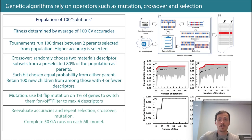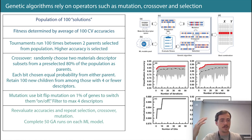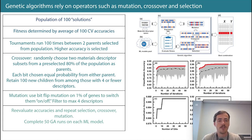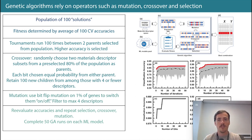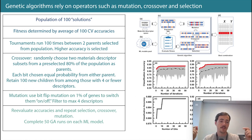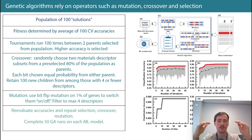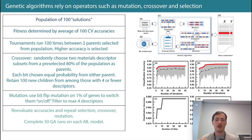The way they picked which four was via the genetic algorithm, which relies on mutation, crossover, and selection to figure out which four should be used. They formed 100 solutions — 100 different four-feature subsets of the 70 possible — and had them compete. They computed the cross-validation score for all 100, then combined the best ones using tournament selection to identify parents.